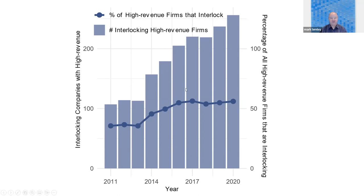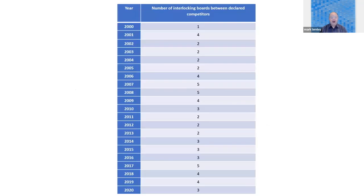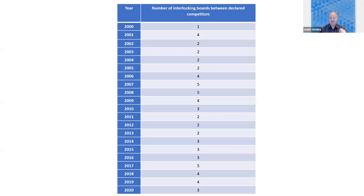The percentage of all high-revenue firms that have interlocking boards has increased to more than 50% of all high-revenue firms. Hundreds and hundreds of these companies are doing this thing which the law says is illegal. As a robustness check, we ran the narrowest, toughest test we could think of: a report of publicly traded companies who have a board member who also serves on the board of a company that the company itself identifies in its 10-K as its primary competitor.